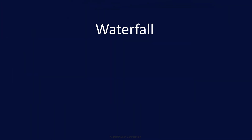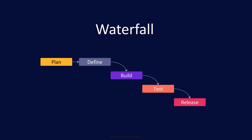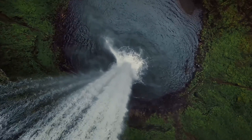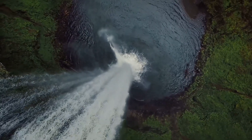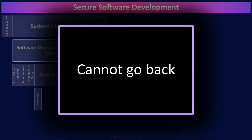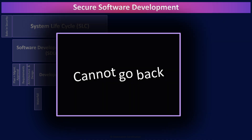Waterfall begins with a plan, then defining requirements, building, testing, and finally releasing. The defining characteristic of waterfall is that each of these phases are conducted one after another, and you cannot go backwards — water can only flow downhill. So if you discover as part of a two-year waterfall project that you missed a requirement, you can't go back and redefine the requirements mid-project. You have to proceed through build, test, and release, and then include the missed requirements as part of the next waterfall cycle.